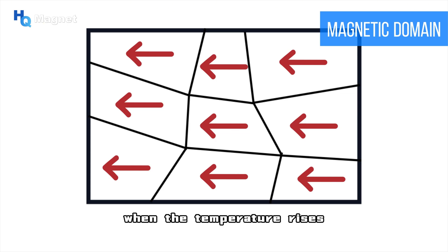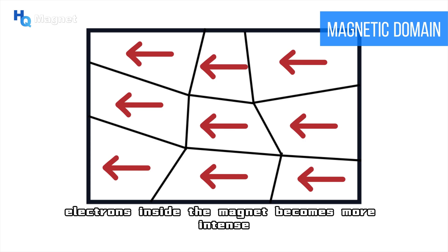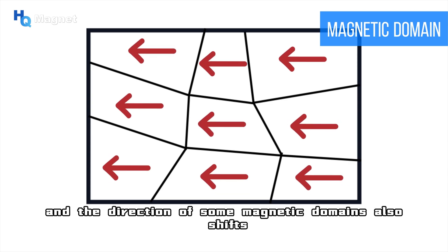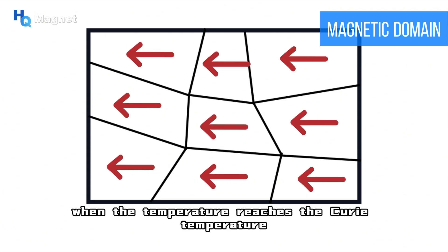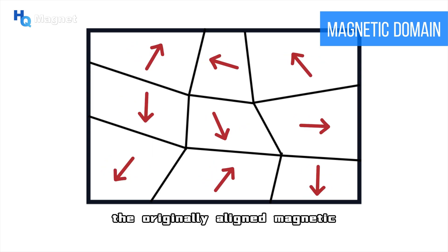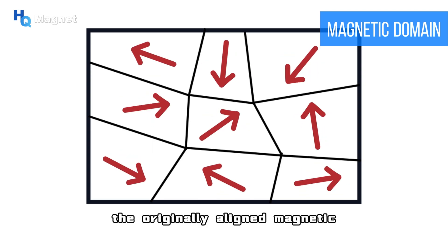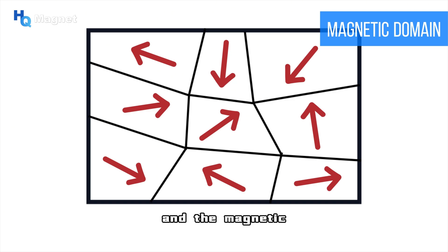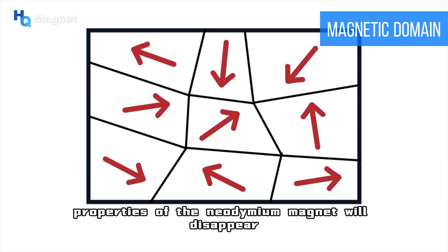When the temperature rises, the thermal motion of atoms and electrons inside the magnet becomes more intense, and the direction of some magnetic domains also shifts. When the temperature reaches the Curie temperature, the originally aligned magnetic domains will become disordered again, and the magnetic properties of the neodymium magnet will disappear.